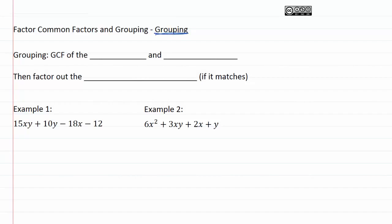When we're dealing with grouping, we want to find the GCF of the left half of the expression and the right half of the expression. So once we've done that, we can then factor out the binomial GCF if it matches.